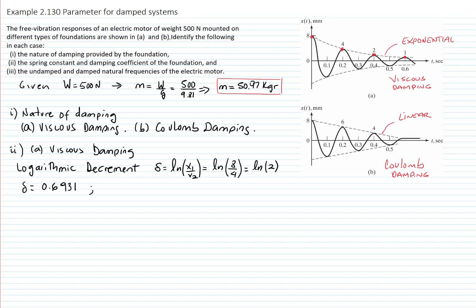From the logarithmic decrement we can calculate zeta. The formula relating the logarithmic decrement to zeta is: zeta equals the logarithmic decrement divided by the square root of (2π)² plus the logarithmic decrement squared. Substituting the value gives zeta equals 0.1097.